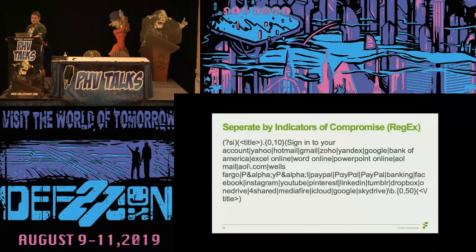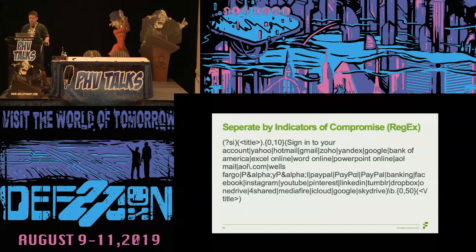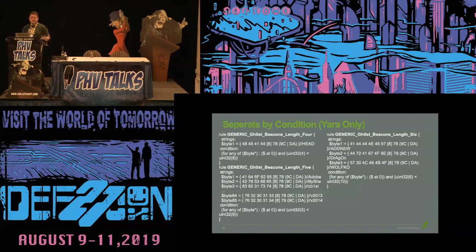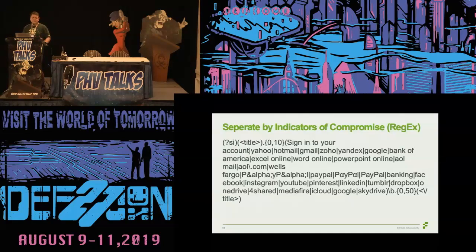How would you do the equivalent in regular expressions? So this example is looking for landing pages to do man-in-the-middle attacks for PayPal, Yahoo, Hotmail, PowerPoint Online, Word Online — Office 365 and so on. These are landing pages used to steal credentials. With regular expressions, you're just grouping the IOCs with the OR clause. That's how you'd do the equivalent of a YARA rule — a totally different detection, but the same idea and concept.